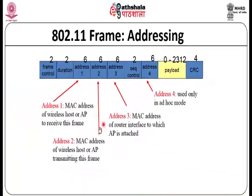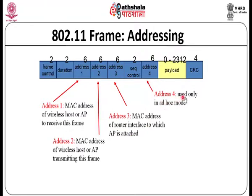Address 1 is the MAC address of the wireless host or access point to receive the frame. Address 2 is the MAC address of the wireless host or access point transmitting the frame. Address 3 is the MAC address of the router interface to which the AP is attached. Address 4 is used only in ad hoc mode. Normally addresses 1, 2, and 3 are used in WLAN.